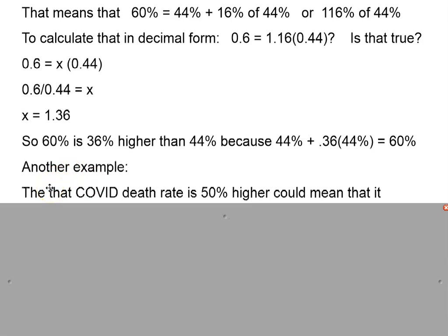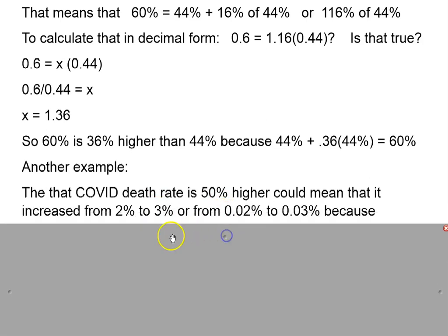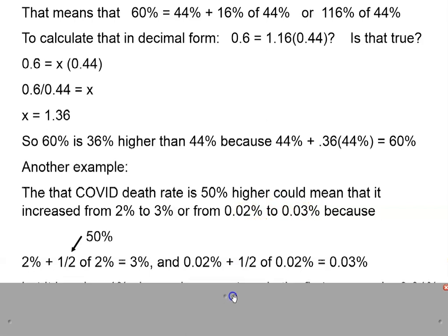The statement that the COVID death rate is 50% higher could mean that it increased from 2% to 3%, or even from 0.02% to 0.03%, because 2% plus 50%, which is one-half of 2%, is 3%. So you take 2% and add one-half of 2%, you get 3%. So we say that 3% is 50% higher than 2%.